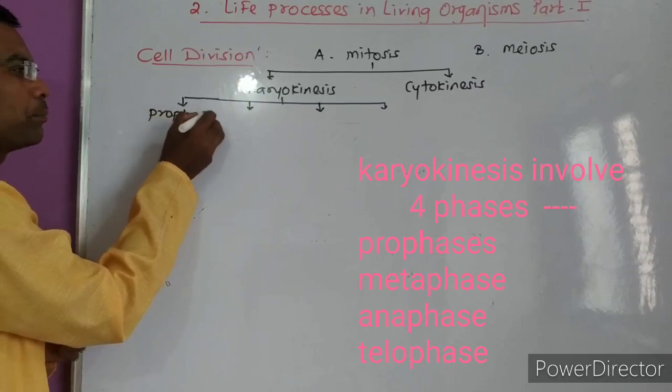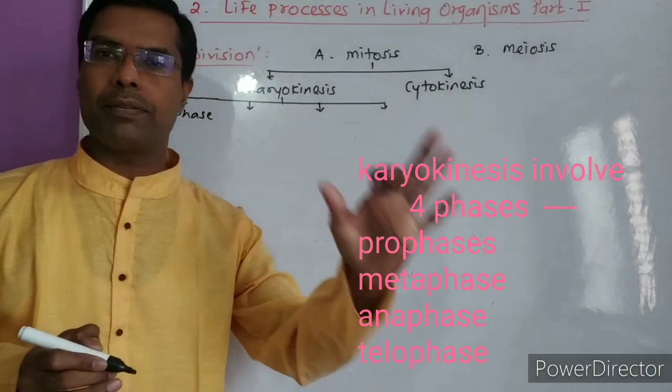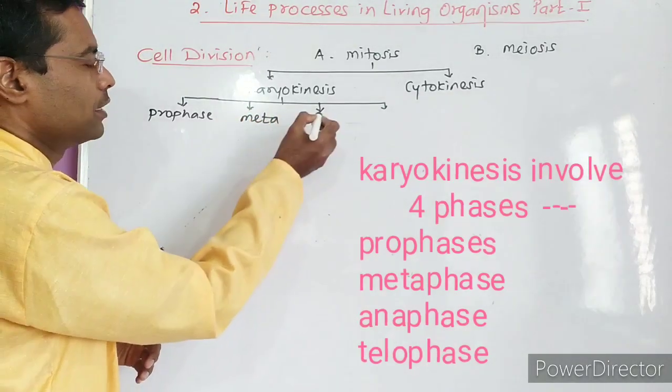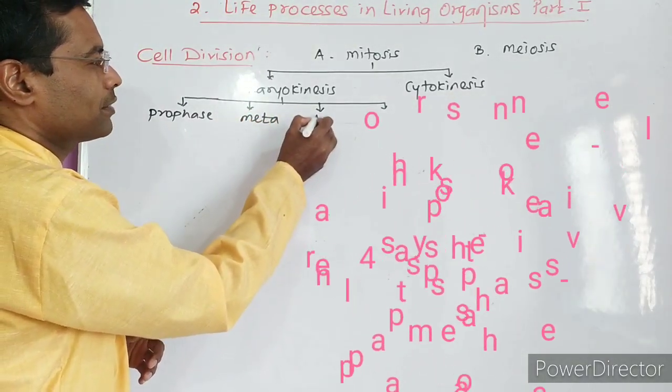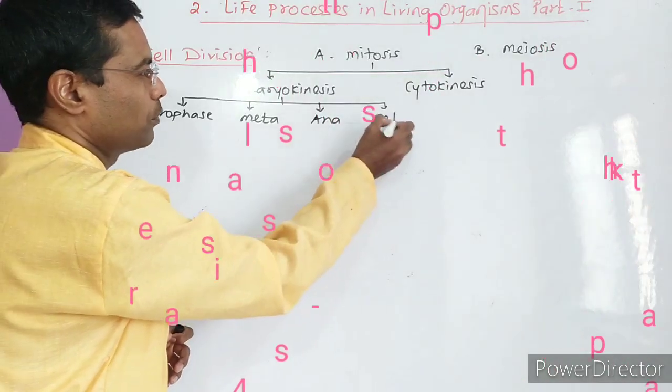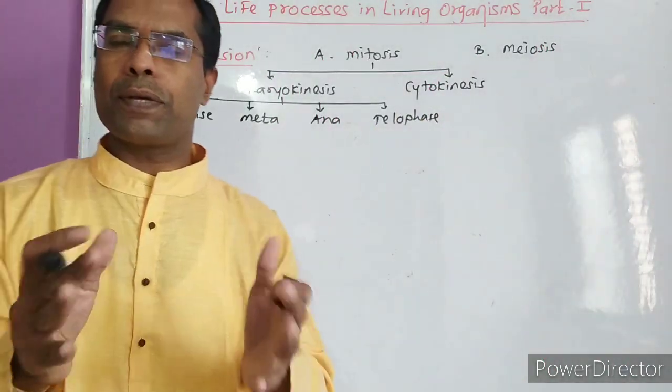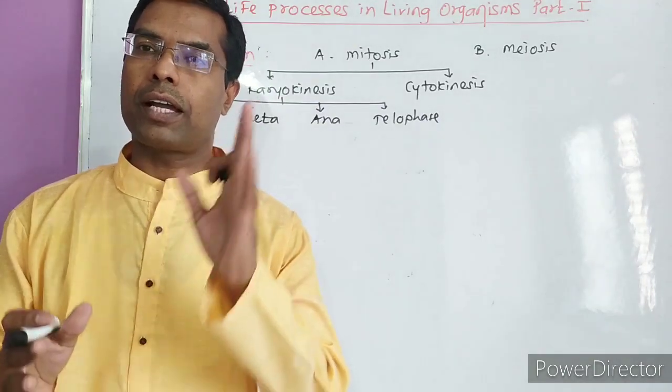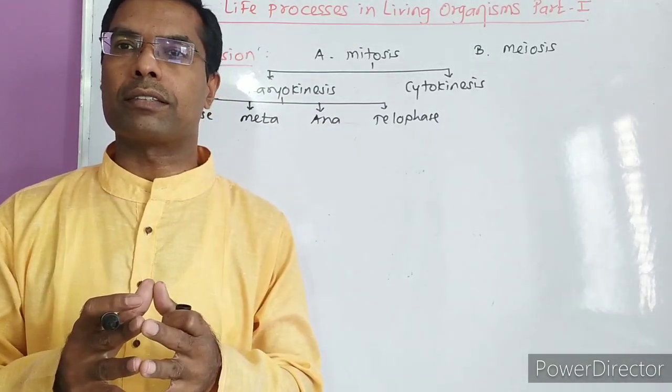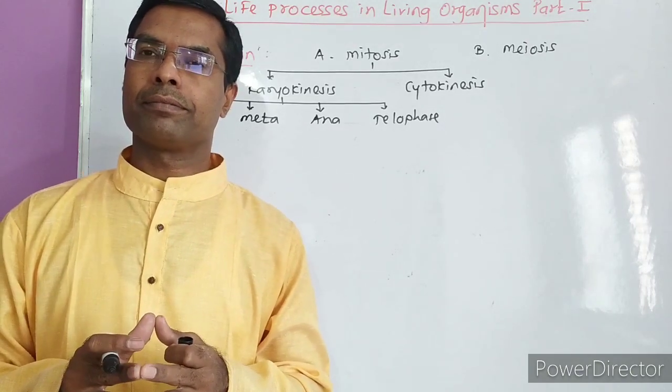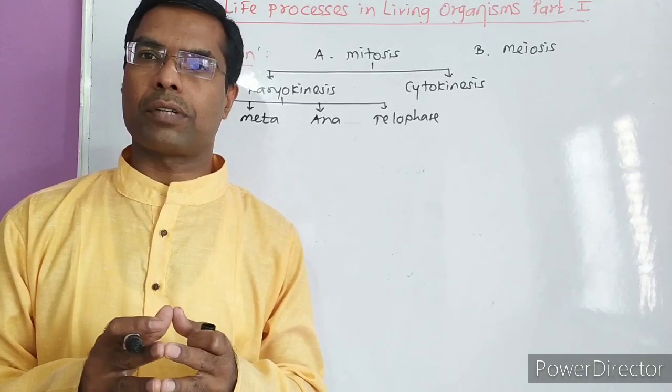First is called prophase - pro means the first phase. The second phase is called metaphase. Third phase is called anaphase. And the fourth is called telophase. So four phases are there in karyokinesis, the division of the nucleus. We have to study it diagrammatically.